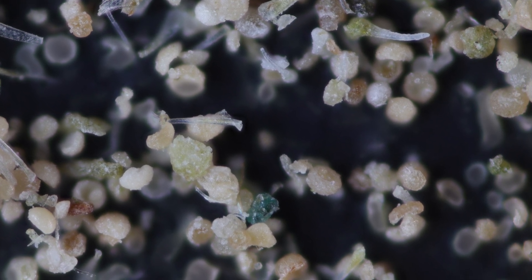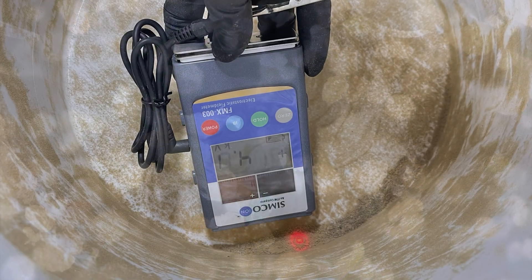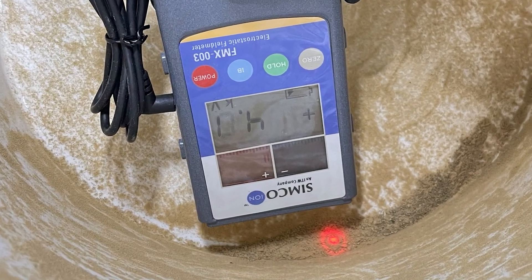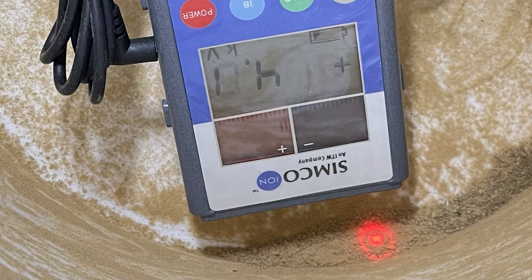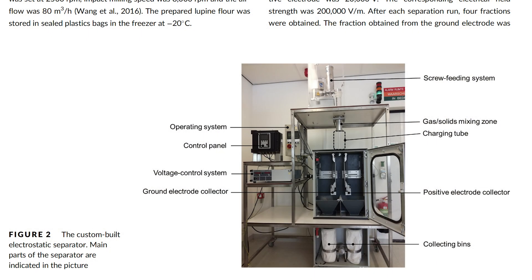Once we're ready to triple charge a particle, we raise the temperature. Nailing this sweet spot is how we achieve 5,000 volts of electrical charge. In conclusion, temperature can have a significant impact on particle separation using static electricity. Understanding the effects of temperature on particle behavior can help us optimize the particle separation process for maximum efficiency. If our particle is too warm, it melts. If the particle is too cold, it doesn't hold a charge.